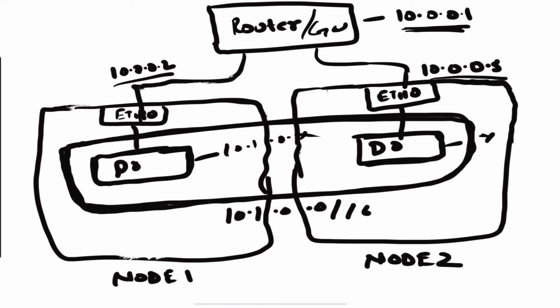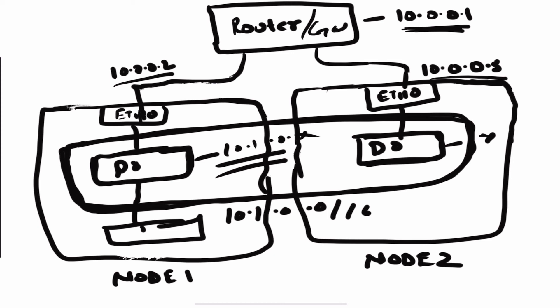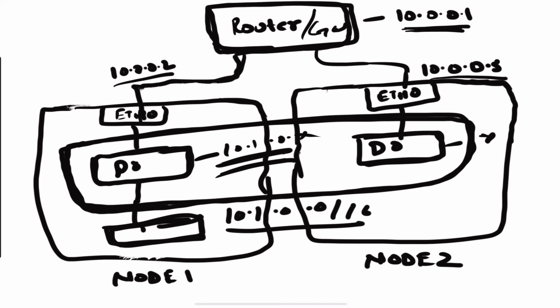Suppose you give an IP address range of 10.1.0.0/16. Each node's bridge gets a different subnet from that range, and the containers running on each node get IP addresses from that node's subnet. Essentially we are subnetting a bigger address range into smaller ranges. The network plugin also populates the routes in the router, so it handles the next-hop routing between nodes.